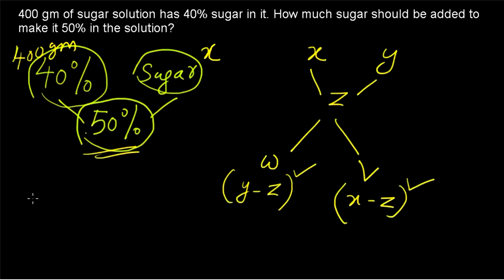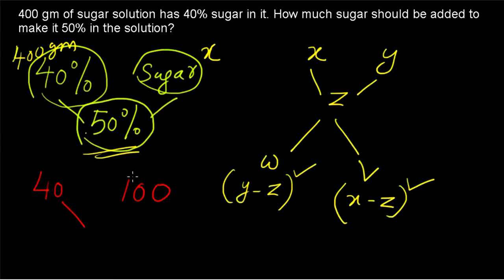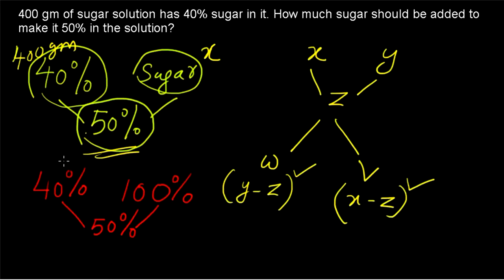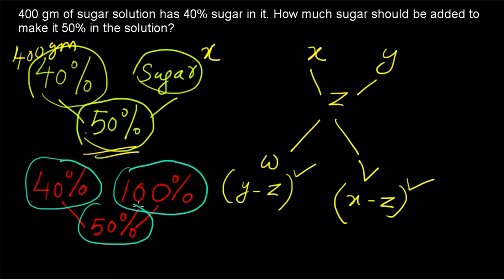Applying the rule of allegation: the 40% sugar solution is getting added with sugar. Since we are adding only sugar — no water — the sugar being added has 100% sugar content. So we have a 40% sugar solution combining with a 100% sugar ingredient to form a 50% sugar mixture. Double-check: all three values — 40%, 100%, and 50% — represent the percentage of sugar, so we can use the rule of allegation.